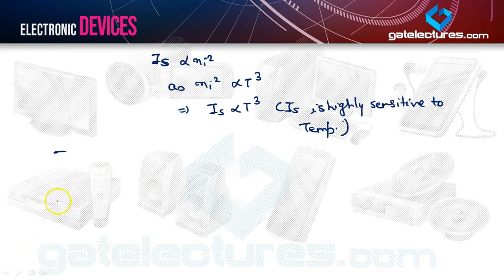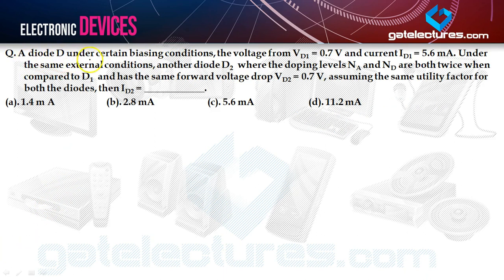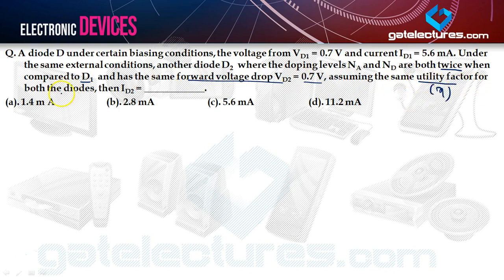Let's have a look at some examples based on this concept. A diode D1, under certain biasing conditions, has voltage VD1 = 0.7V and ID1 = 5.6mA. Under the same external conditions, another diode D2, where the doping levels NA and ND are both twice that of D1, has the same forward voltage drop VD2 = 0.7V. Assuming the same ideality factor η for both diodes, what is ID2?